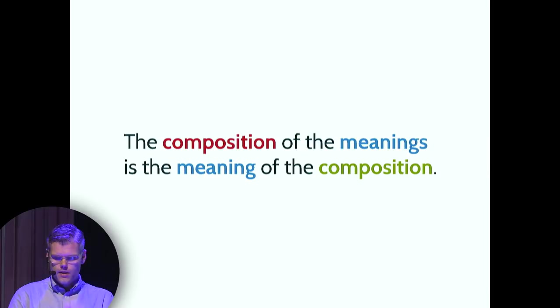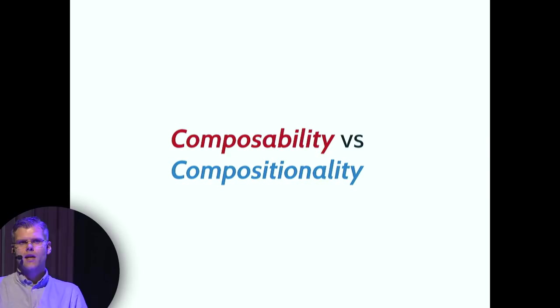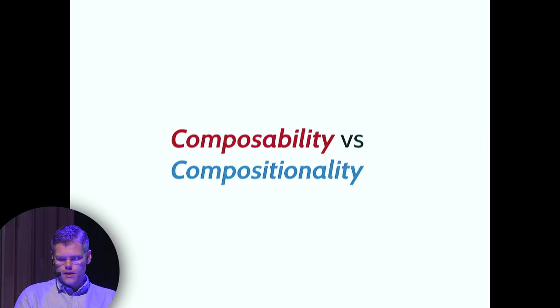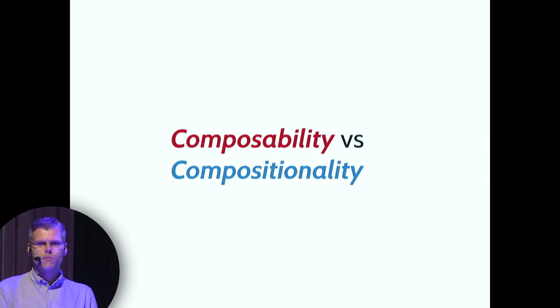I'm saying compositionality, not composability. Composability doesn't capture the idea I'm trying to convey — it's a weaker notion. It conveys the idea that something is able to be composed, like if you write a lot of code or do a lot of JSON serialization. But compositional expressions are natively and fractally composable. They always are able to compose, and that is in fact the only thing they do — the only thing compositional expressions do is compose.